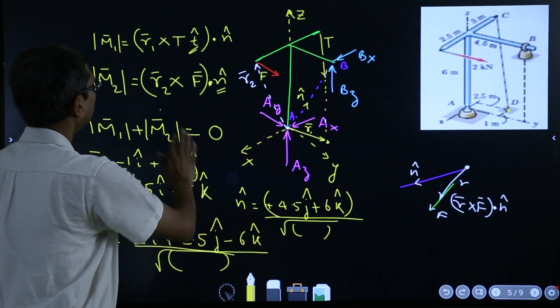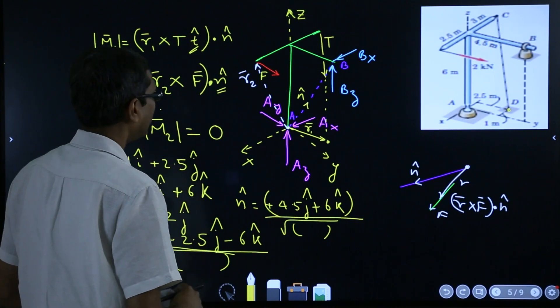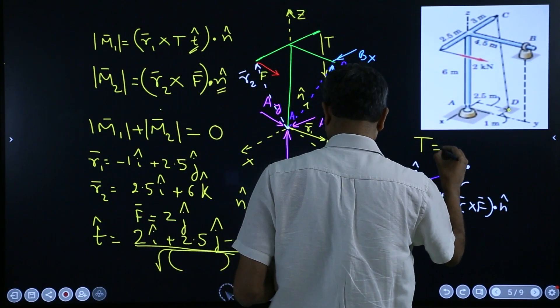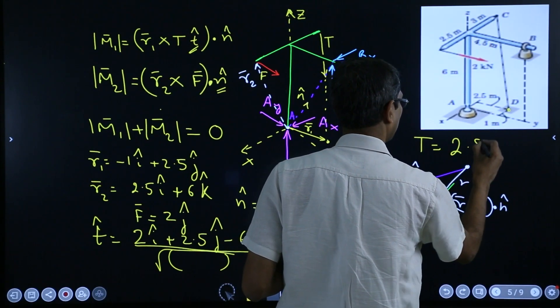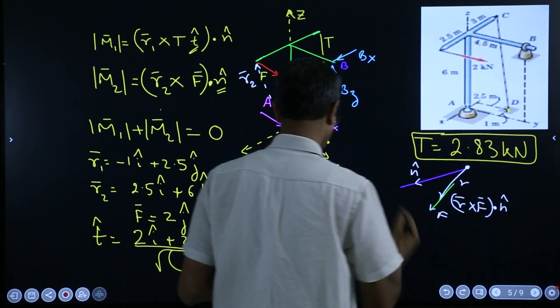So now, once you do that, you can simply evaluate this equation. From there, you can evaluate T. And the T you will come to this 2.83 kilo Newton.